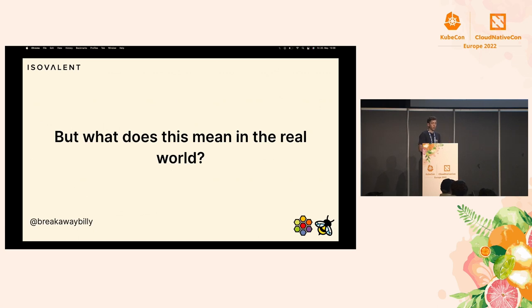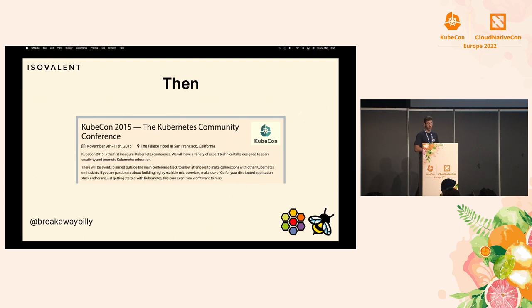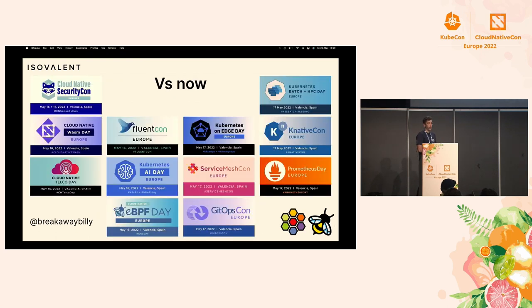So far this talk has really just focused on theory. What does this actually mean in the real world? The simple one is where we are right now: KubeCon CloudNativeCon. The website for the first KubeCon in 2015 was a very simple, small thing. It's expanded a little bit since then. We now have co-located events on Monday and Tuesday covering everything from security, WASM, and telecommunications to GitOps. It's not just about Kubernetes anymore — the innovation is moving up the stack and expanding into all these new categories.